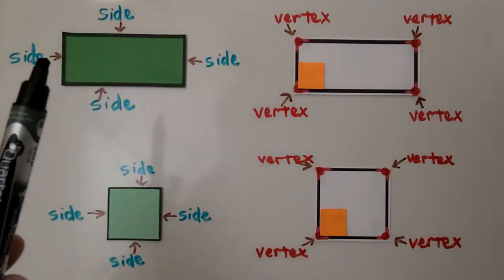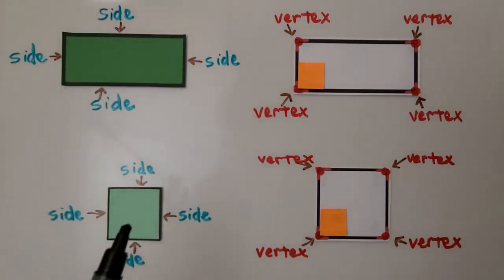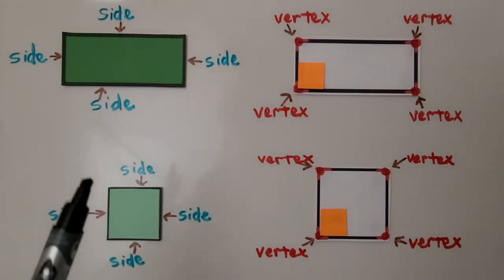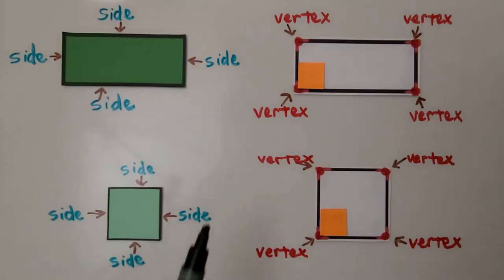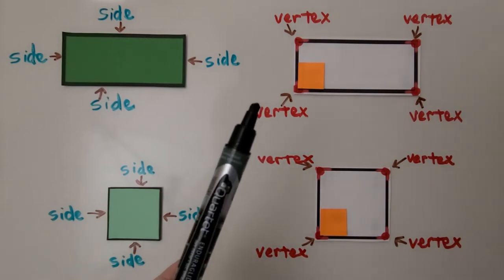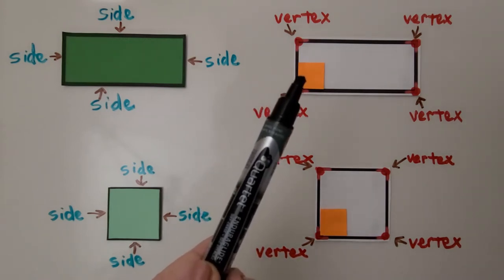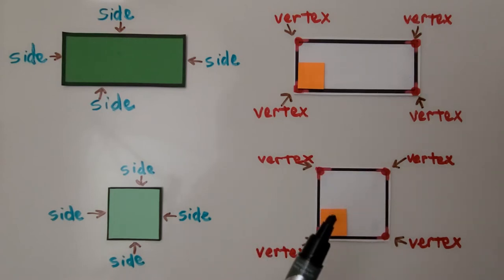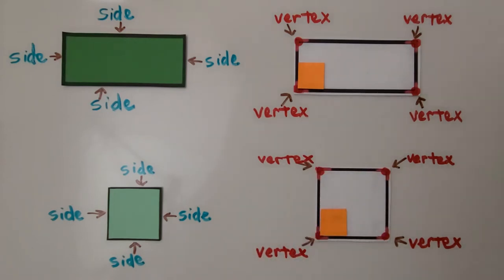This shape has four sides — one, two, three, four. This one also has four sides — one, two, three, four. The sides are straight. And we have four square vertices. A square has four square vertices, which means a square is also a rectangle.